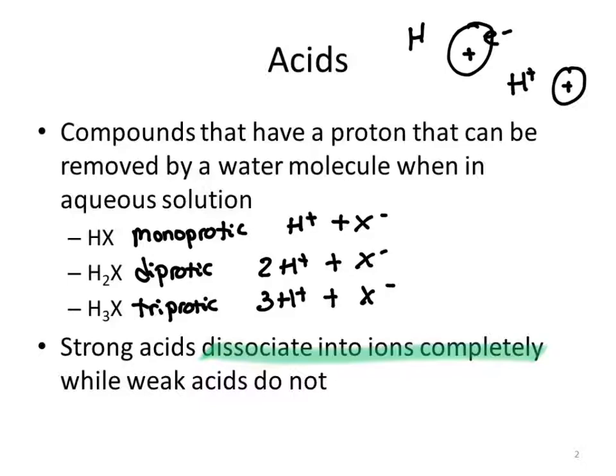When acids ionize, they do it successively. So for a triprotic acid, the protons come off one at a time — first one, then two, then three. They come off successively, not all at once.